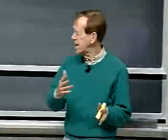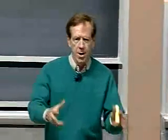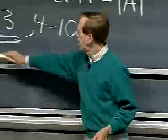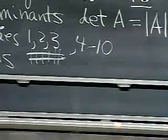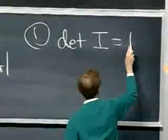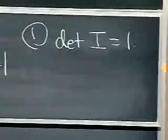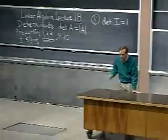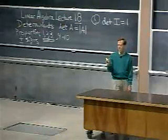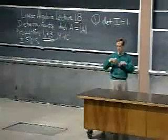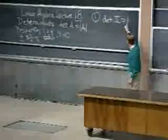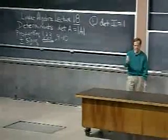Now the question is how to start. Do I give you a big formula for the determinant all in one gulp? I don't think so — that big formula has got too much packed in it. I would rather start with three properties of the determinant. Property one: the determinant of the identity is one. I wish the other two properties were as easy to state. Those three properties define the determinant, and from them we can figure out what the determinant is and what the formula is.